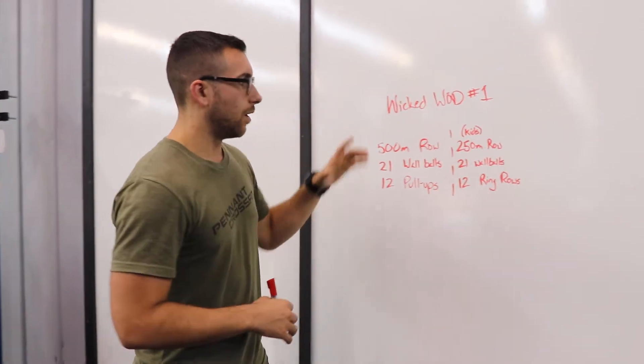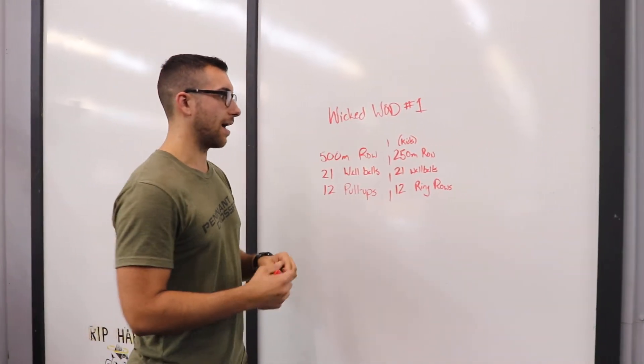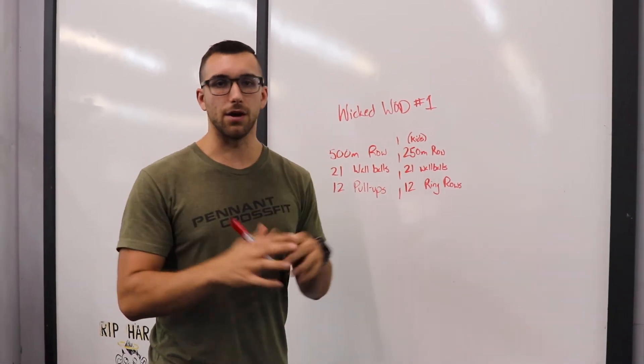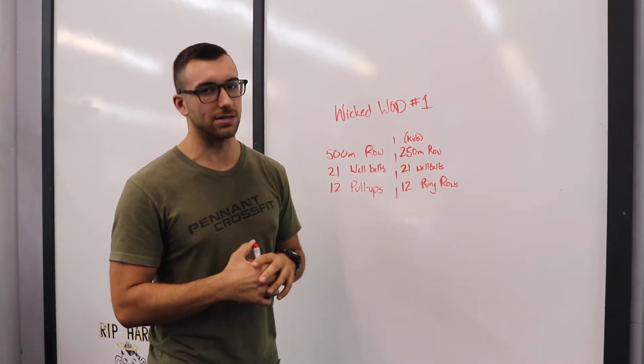Once again, the kids version: we're gonna have 250 meter row, 21 wall balls, 12 ring rows. They're gonna be right in there with your teams, they'll be working out with you guys. It'll be fantastic.